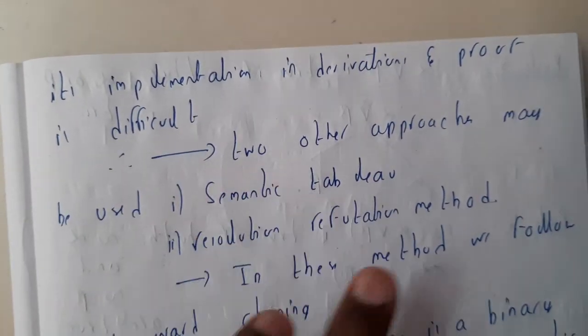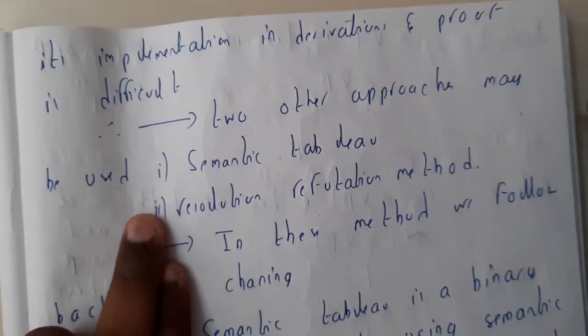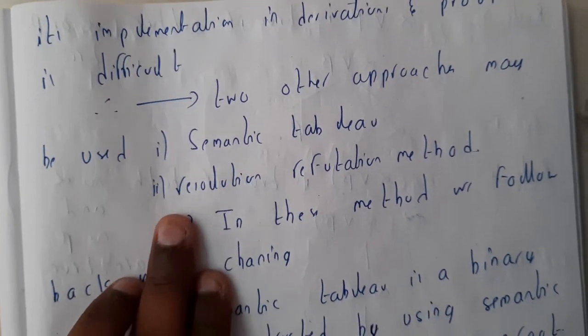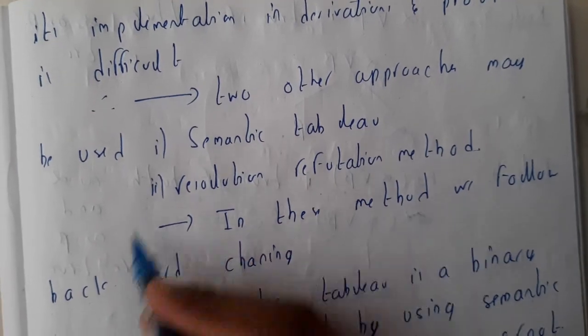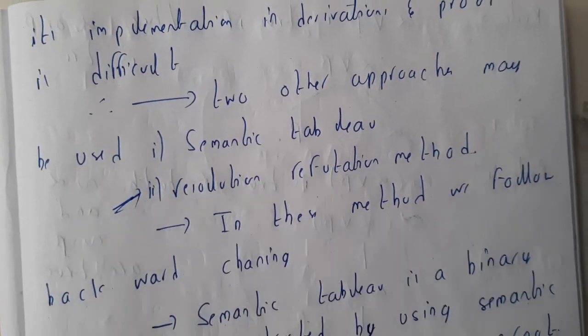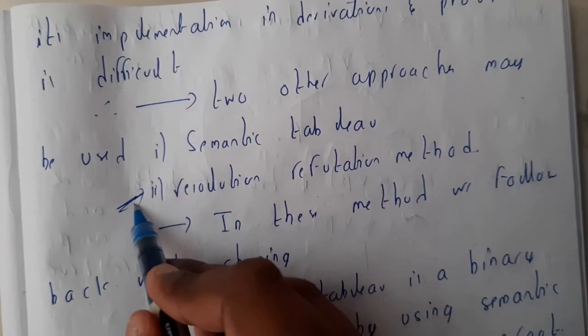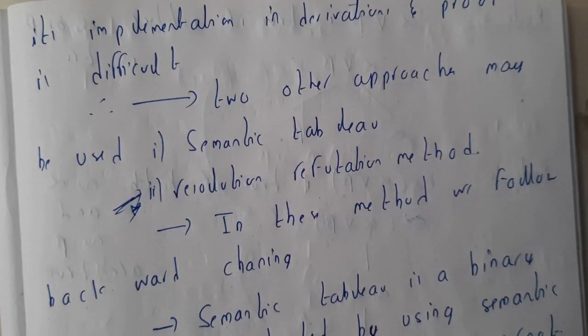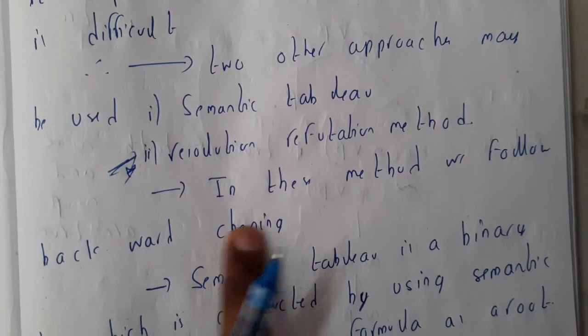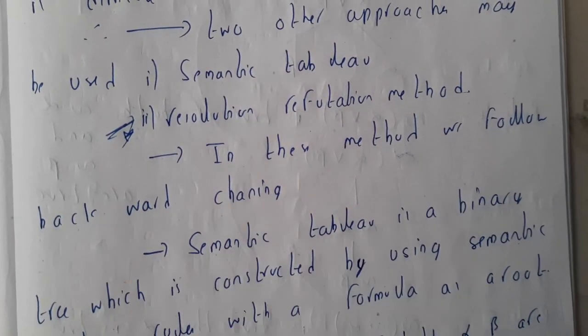So that is the reason why this came into play. Two approaches may be used: semantic tableaux and resolution refutation method. This we will be discussing in our next lecture. Please don't miss this topic, because resolution topic will be discussing about this. So in this method we follow backward chaining.